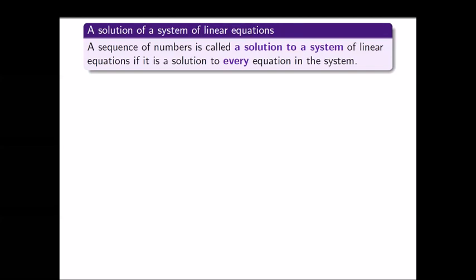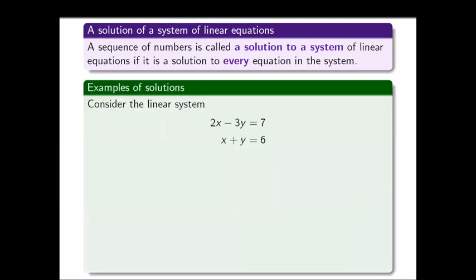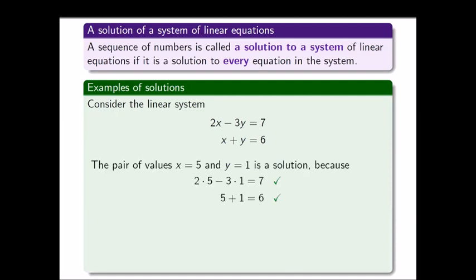So instead of satisfying just a single equation, your choice of values has to satisfy every single equation in the system. For the system 2x minus 3y equals 7 and x plus y equals 6, choosing x equals 5 and y equals 1: we get 2 times 5 minus 3 times 1 equals 7 ✓, and 5 plus 1 equals 6 ✓. Both equations are satisfied, so x equals 5, y equals 1 is a solution to the system.